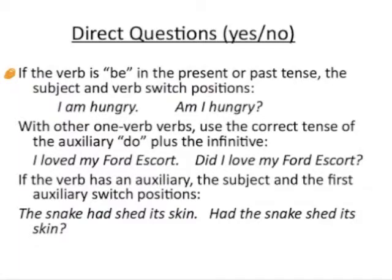If your verb is 'be' in the present or past tense — meaning it has only one word with no auxiliary — the subject and the verb switch positions. So 'I am hungry' becomes 'Am I hungry?' 'I' is still your subject and 'am' is still your verb, but they've switched.